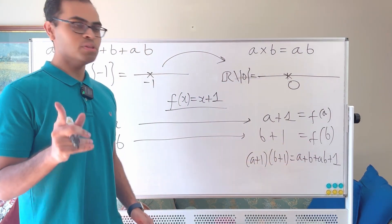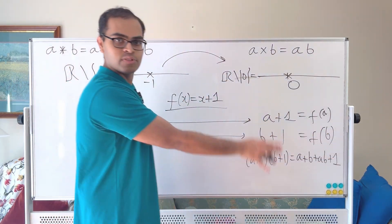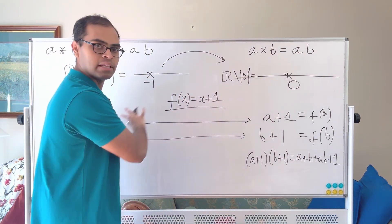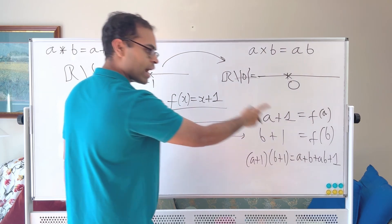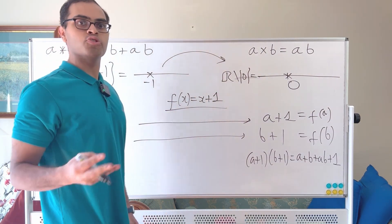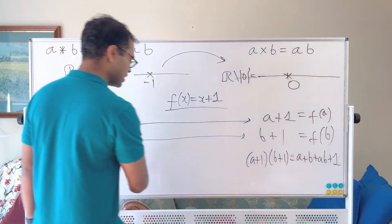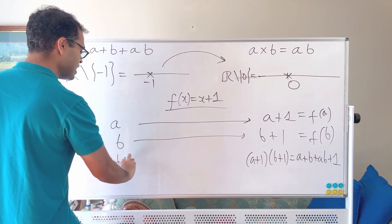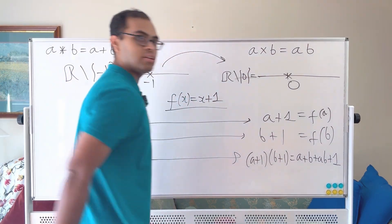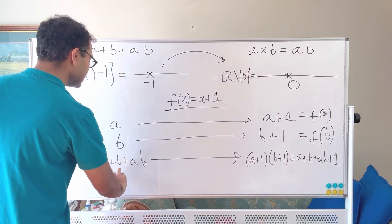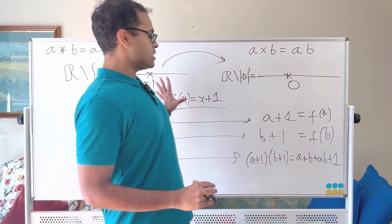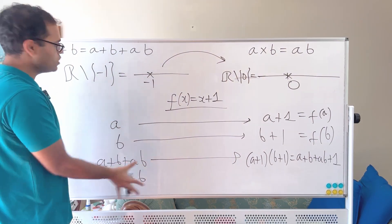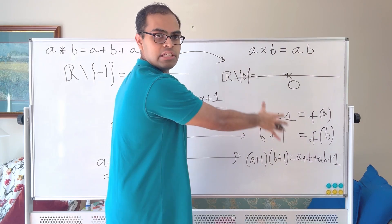That result, a + b + ab + 1, is actually the disguise of something on the left-hand side. Since our disguise adds 1, to go from right to left we subtract 1. So the element whose disguise is a + b + ab + 1 is a + b + ab — and that is exactly a ★ b. So the function f(x) = x + 1 is disguising the ★ operation as multiplication on the right-hand side.